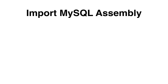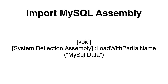Now that we have remote access to the MySQL server, we can use PowerShell to import the MySQL connector into our PowerShell session. We type [void] followed by [system.reflection.assembly] followed by two colons, then LoadWithPartialName, and the name mysql.data in round brackets and quotation marks.